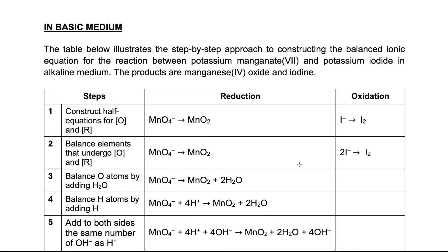If the redox reaction happens under alkaline conditions, there are a few additional steps we have to do. We are going to use the reaction between potassium manganate 7 and potassium iodide. Same as before, we start by writing the half equations for reduction and oxidation, then balance the atoms that undergo reduction and oxidation.